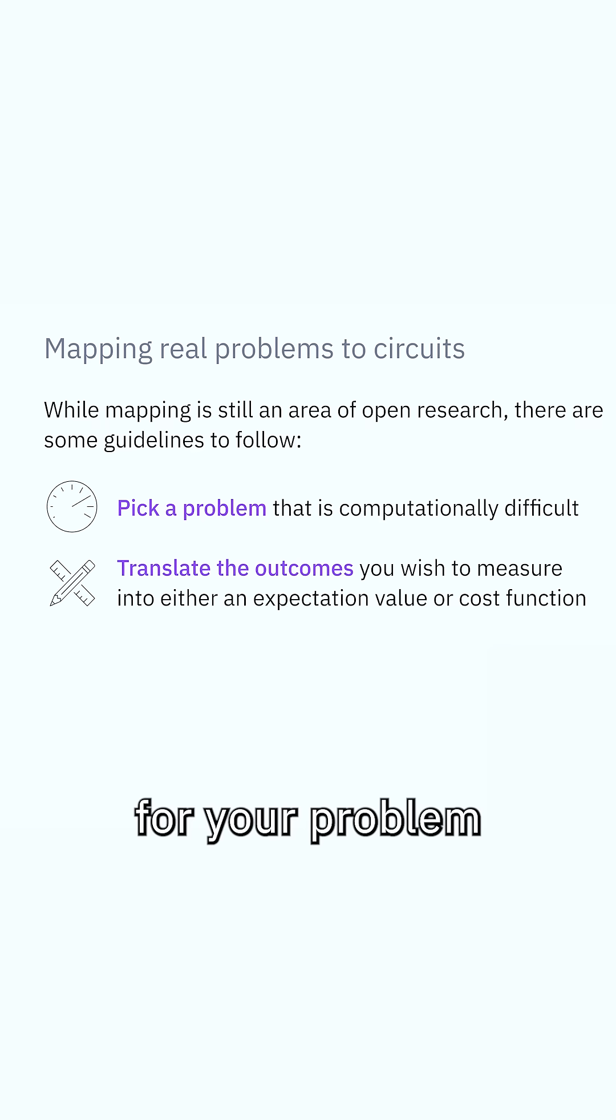Next, translate the outcomes for your problem that you want to measure or understand into an expectation value problem or a sampling problem. For most types of problems, this essentially corresponds to calculating a cost function. This notion can be applied to various applications in chemistry, machine learning, finance, optimization, and so on.